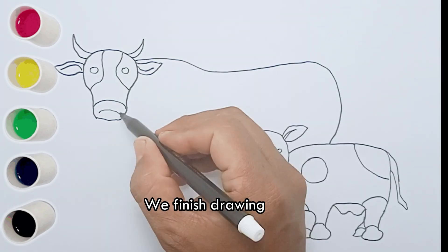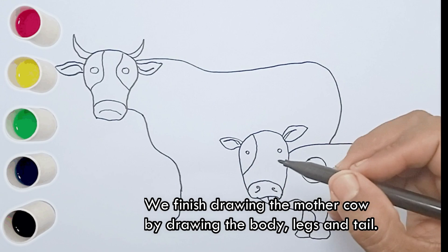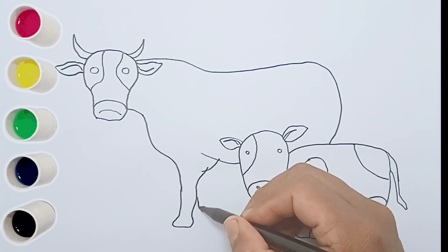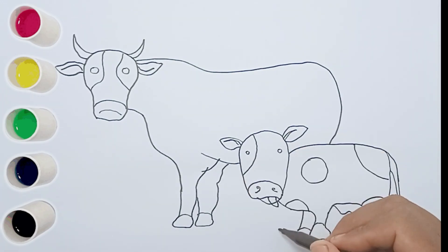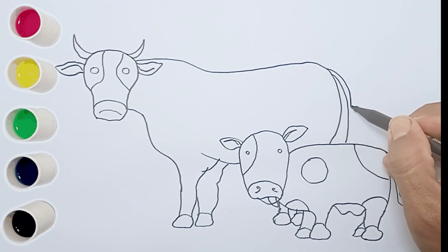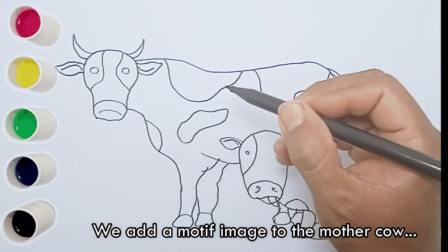We finish drawing the mother cow by drawing the body, legs and tail. We add a motif image to the mother cow.